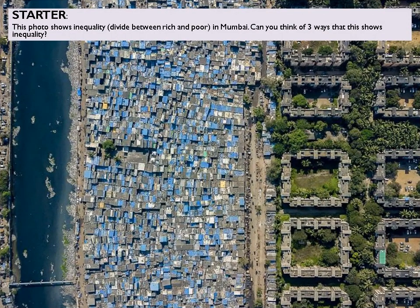For our starter, this is a photo taken using a drone which shows inequality in Mumbai — that is the divide between rich and poor. Can you write down or think of three ways that this shows inequality? So what we can see is that very broadly speaking, we have a poor area on the left and a richer area on the right.